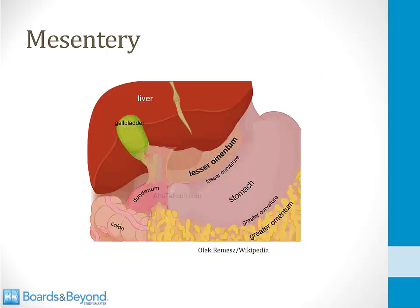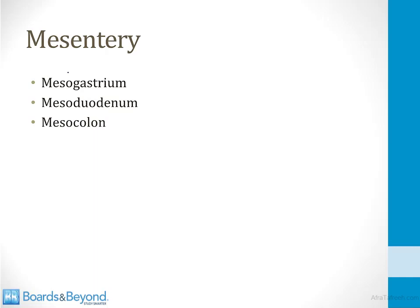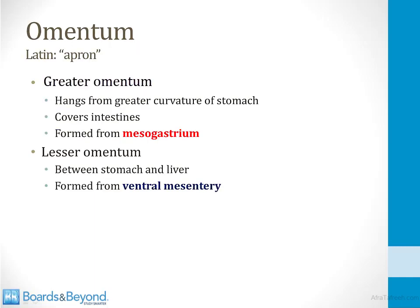The lesser omentum connects the stomach and liver, and the falciform ligament connects the liver to the anterior abdominal wall — both derived from ventral mesentery. Mesentery is named by the organ it surrounds: mesogastrium around the stomach, mesoduodenum around the duodenum, and mesocolon around the colon. The greater omentum — a Latin word for apron — hangs from the greater curvature of the stomach, covers the intestines, and is derived from mesogastrium and therefore mesoderm.